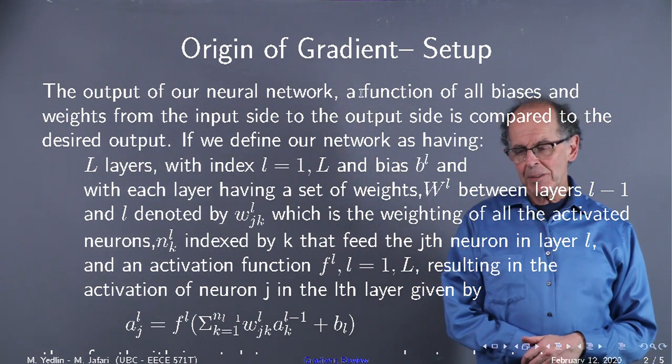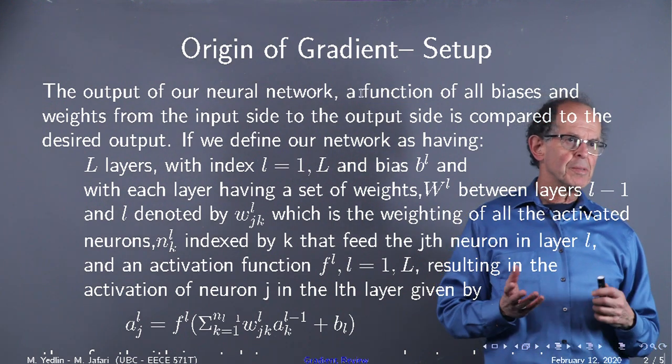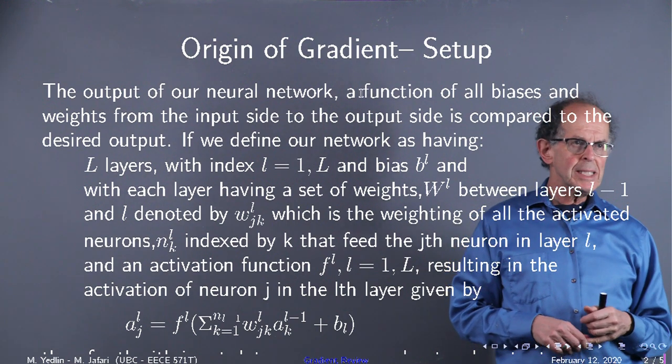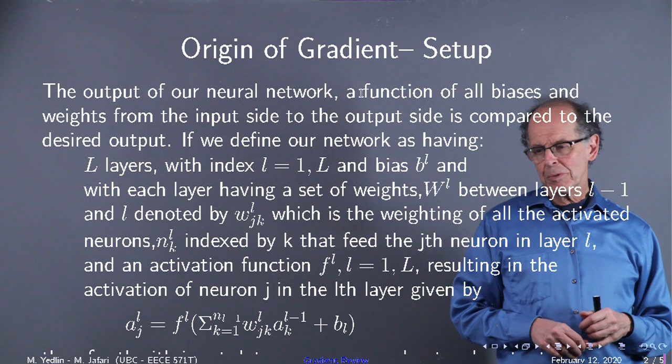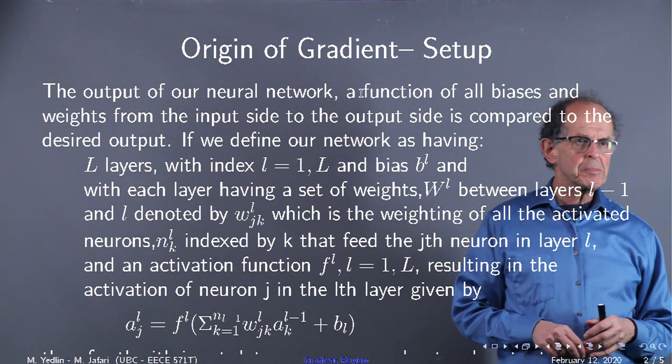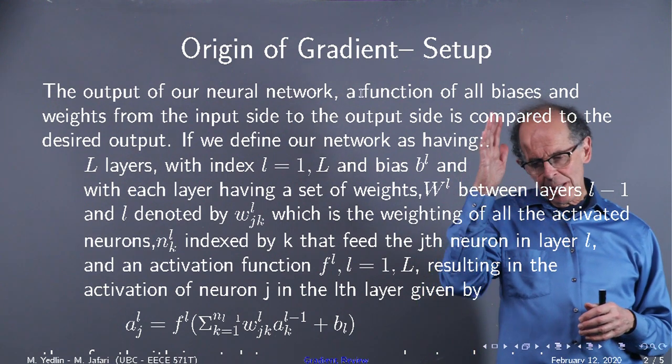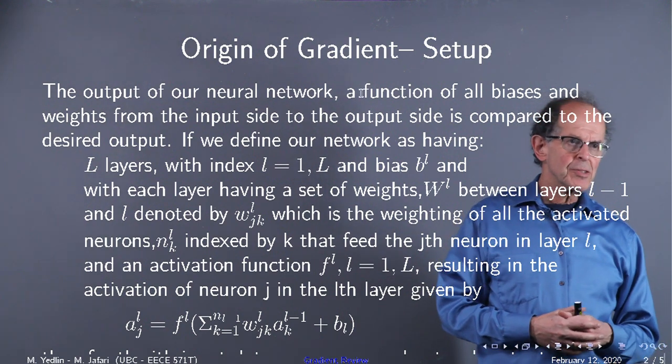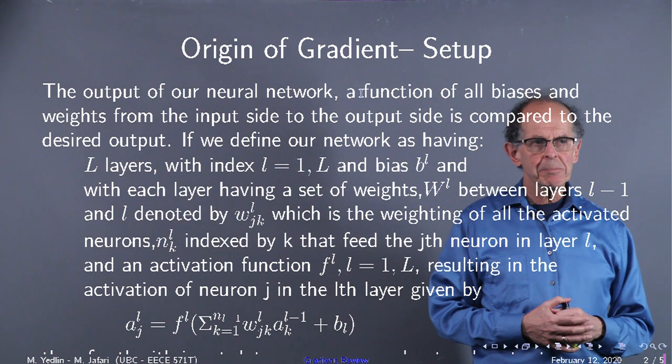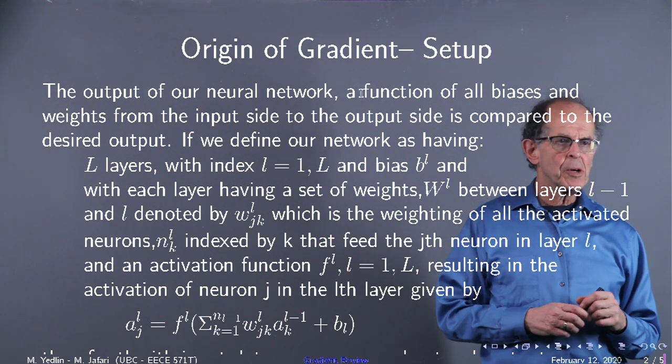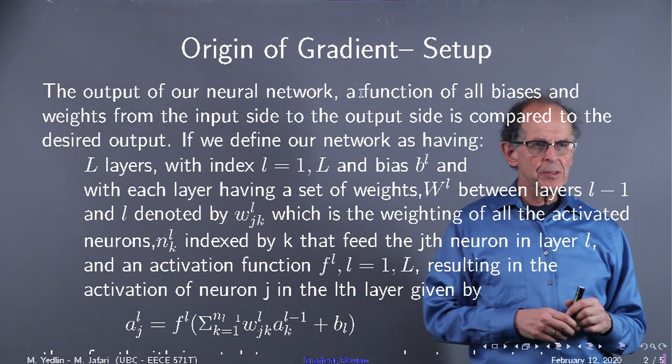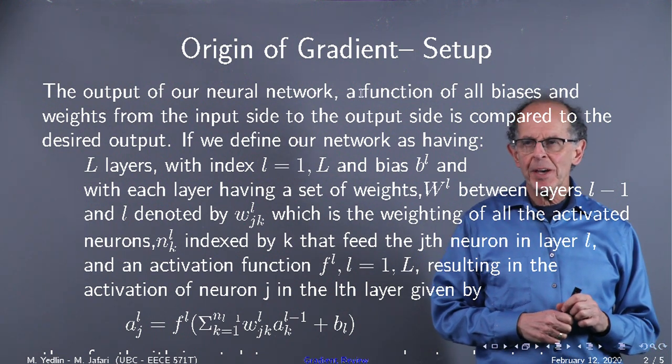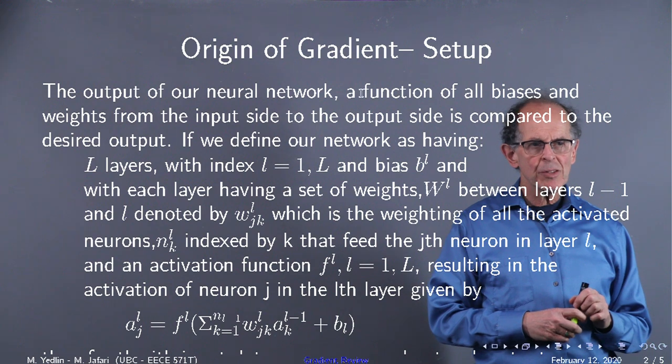It comes from the fact that we want to find the weights in our neural network. We have capital L layers with weights w superscript l and biases b superscript l. The weights between neurons in layer l minus one indexed by k feed the jth neuron in the next layer. In that next layer, an activation function is defined, and the whole equation gives us the activation of the lth layer, having been fed from the neurons in the l minus one layer.